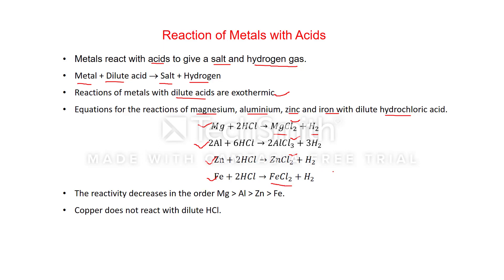You have to remember that iron can also form FeCl₃, but the final product is always FeCl₂. This is because hydrogen produced in the reaction acts as a reducing agent and reduces Fe³⁺ to Fe²⁺, so we do not get FeCl₃.